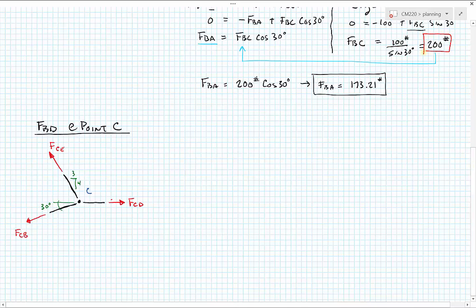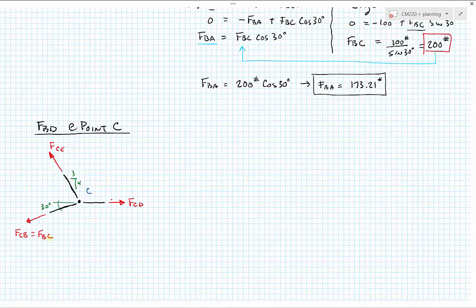From Newton's laws — equal and opposite forces — equal forces act in opposite directions. So FCD at point C equals FBC at point B because they are the force in the same cable. With this free body diagram established, we need to break these forces into horizontal and vertical components and apply our equations of equilibrium, so let's redraw with components.